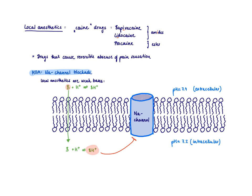So how do we distinguish between amides and esters? Well, that's very easy because all the amides have an I in front of the cane and the esters do not have an I in front of the cane. So you can easily figure out which one is an amide and which one is an ester local anesthetic.